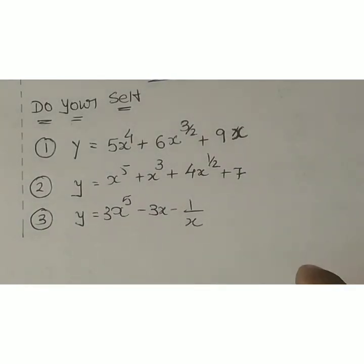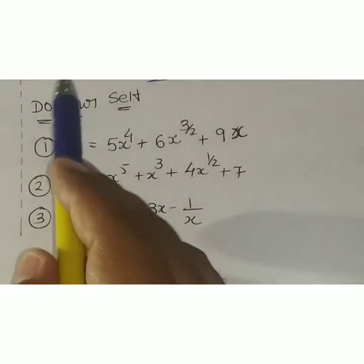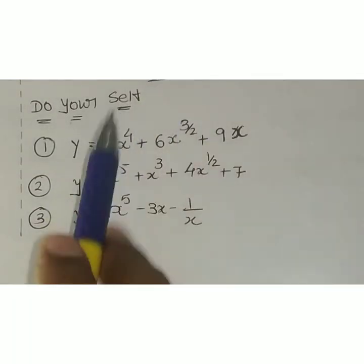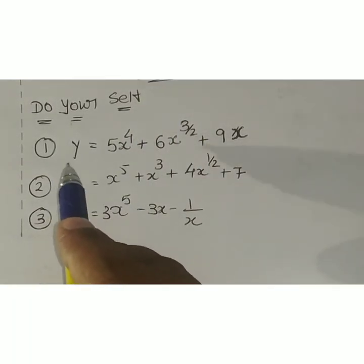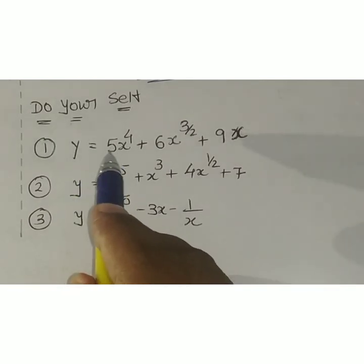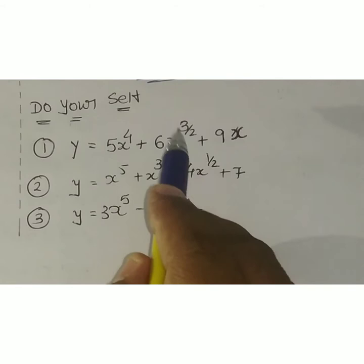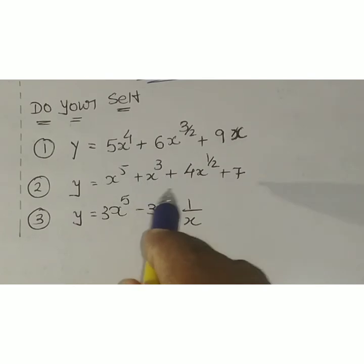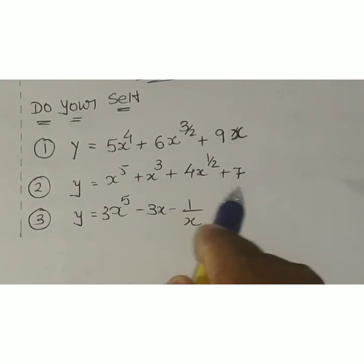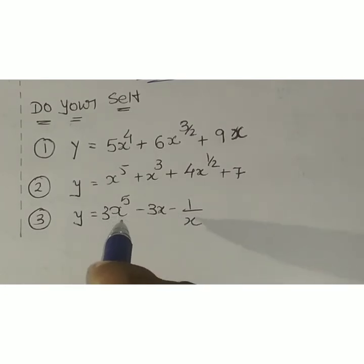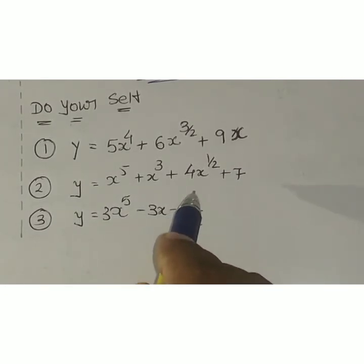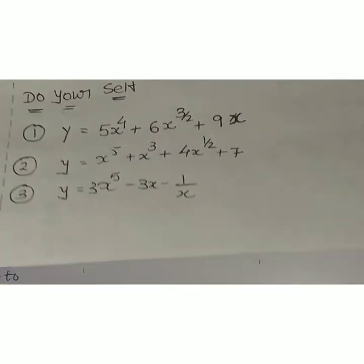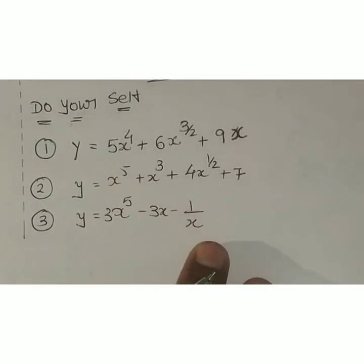Now I am giving you some questions to do yourself — apply everything I taught, just calculate the answers. Question 1: y = 5x⁴ + 6x^(3/2) + 9x. Question 2: y = x⁵ + x³ + 4x^(1/2) + 7. Question 3: y = 3x⁵ − 3x − (1 upon x). These three questions are your homework — bring me the answers.